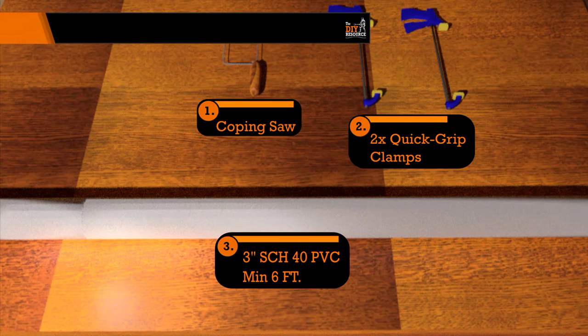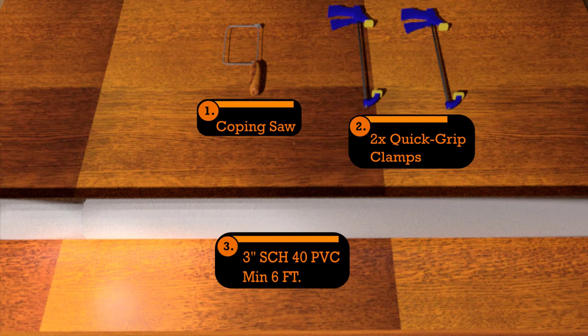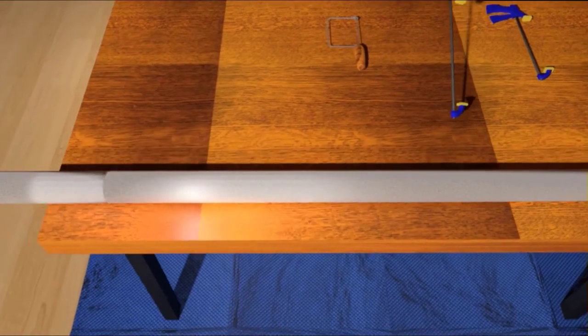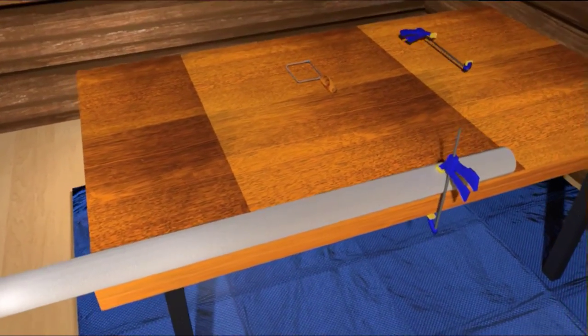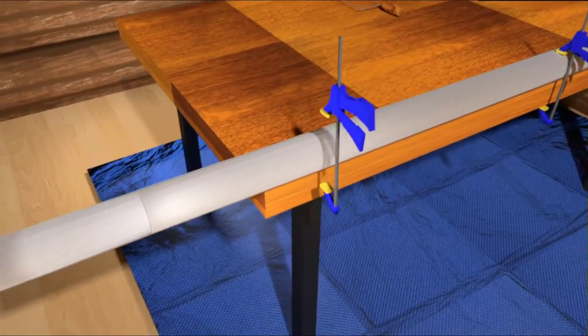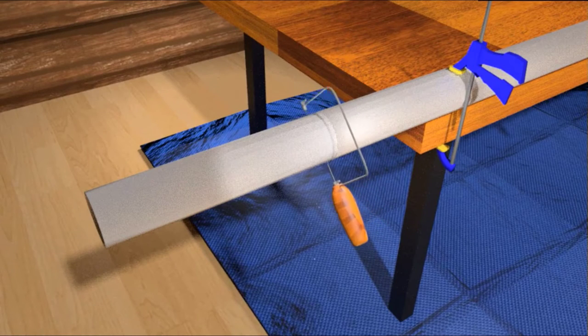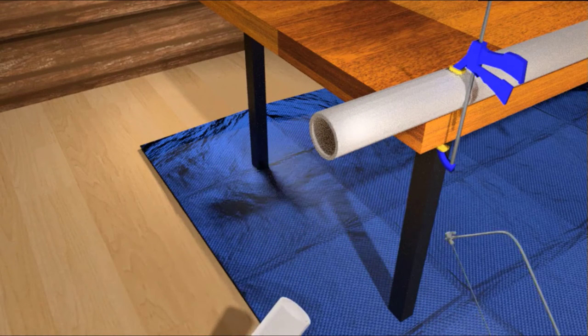Step 1. Cut 3 inch PVC to length. For this step, you're going to need your large piece of 3 inch PVC. Grab a tape measure and measure out 6 feet on the PVC, marking a line using a permanent marker. Set the PVC on your workbench and bring it to the edge. Use your clamps to hold the PVC to the bench and then proceed to cut the PVC with your coping saw. Use quick motions and make sure to keep your cuts straight.